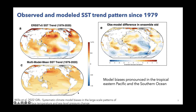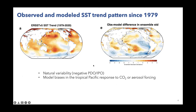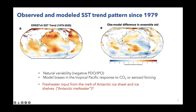Models in general produce biases, most pronounced in the eastern Pacific and southeast Pacific sector of the Southern Ocean, where observations show cooling trends but models miss that. Regarding this model-observation discrepancy, proposed mechanisms include natural variability — it looks like a negative phase of the IPO or PDO — or model biases in radiative forcing or the forced response, such as a biased tropical Pacific SST response to CO2 or aerosol forcing.